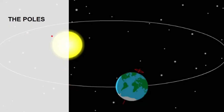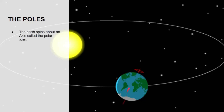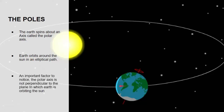Moving on to the poles. We all know that we have two poles: north pole and south pole. The earth spins about an axis called the polar axis, and we are all very familiar that the earth spins about this axis. Earth orbits around the sun in an elliptical path. An important factor to notice is that the polar axis is not perpendicular to the plane in which earth is orbiting the sun.